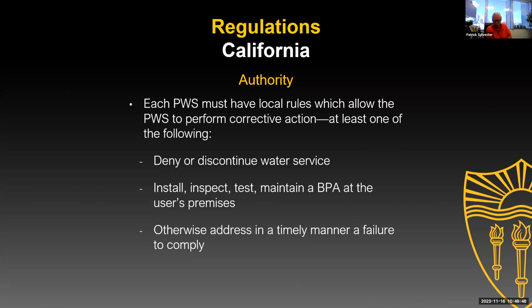That may be a local code ordinance or something similar. Some areas say you put in a backflow preventer, get it tested, send the results, or they will do it and bill you for it — or some water agencies just deal with it themselves and don't bill the customer, making their water a bit more expensive. But you have to have some sort of local code or ordinance that gives you the authority to shut off the water if someone doesn't comply, or to install a backflow preventer if someone doesn't comply, to ensure that customers do comply.